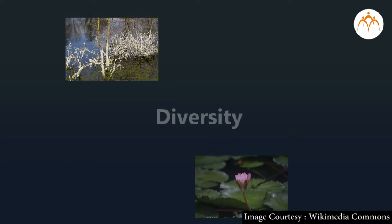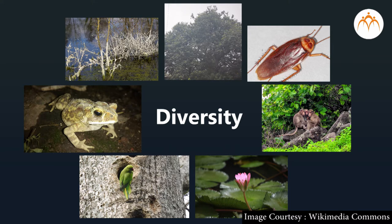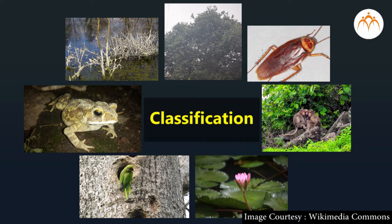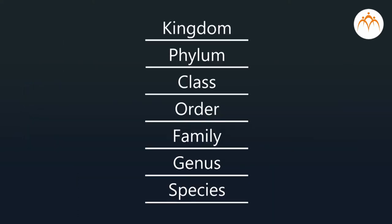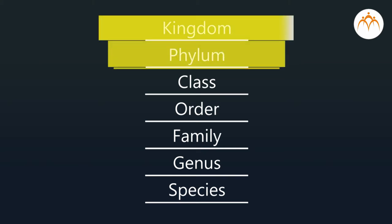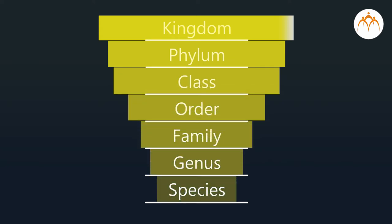We have seen that living organisms show great diversity in terms of habitat, structure, nutrition pattern, and so on. Hence, to study them systematically, classification is very necessary. While grouping organisms, we must take into account similarities and differences. A classification system begins with a large group and ends with a single species, with each level being a part of the previous one.